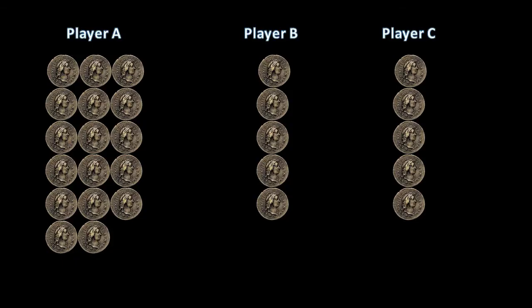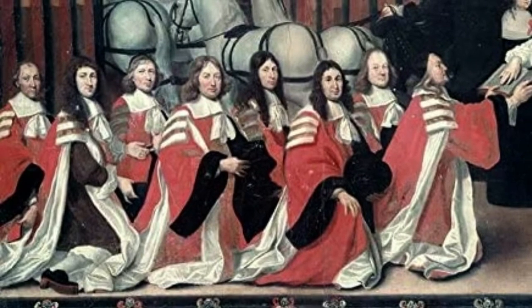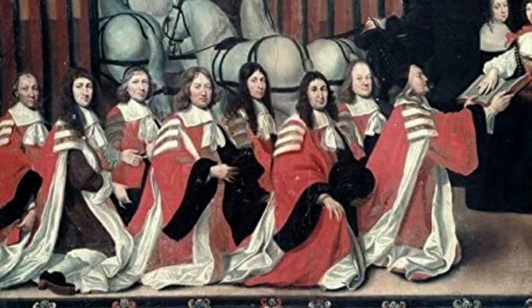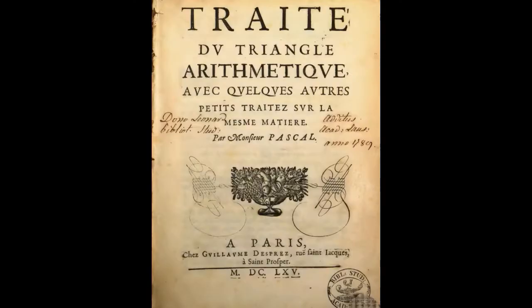Fermat's next letter came quickly, on August 29th, and in it he agreed that Pascal's division of seventeen, five, and five pistoles for the three gamblers was correct. But he did not go into further detail. He explained that the end of Parliament augmented his duties and asked for respite. He also complimented the Treatise on the Arithmetical Triangle, which Pascal had sent him. Almost a month passed before Fermat wrote again, on September 25th, and elaborated on his thinking.